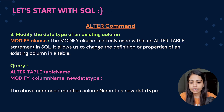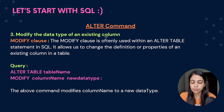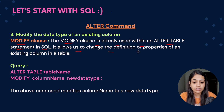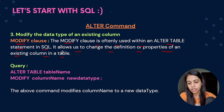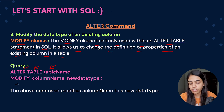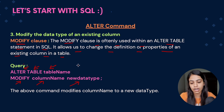Now the third use case is modifying the data type of an existing column. Whenever we want to do some modification in the data type of an existing column, we use this ALTER command with the MODIFY clause. The MODIFY clause is often used with an ALTER TABLE statement in SQL — it allows us to change the definition or the properties of an existing column in a table. The query is: ALTER TABLE, then the table name, then MODIFY, then the column name, and then the new data type you want to set for that column.